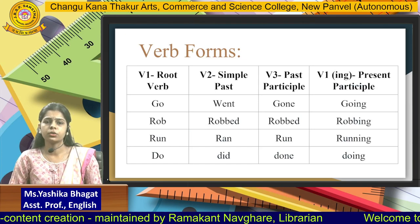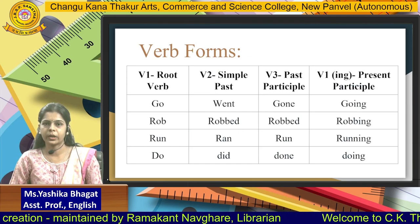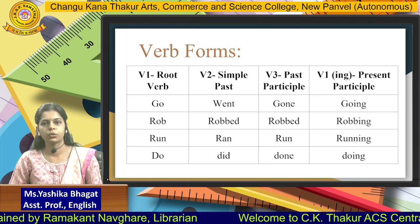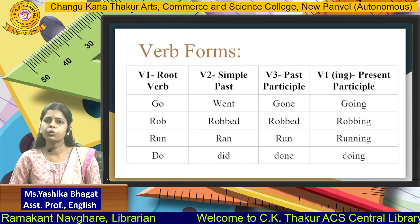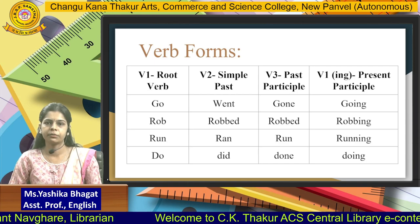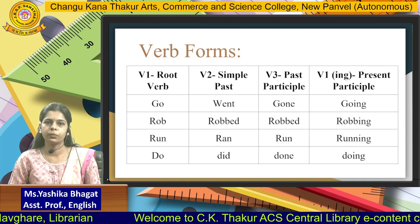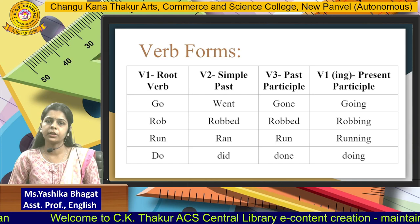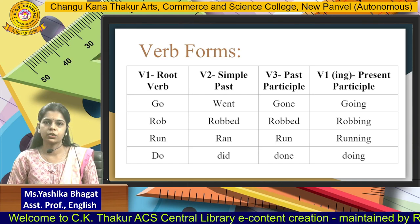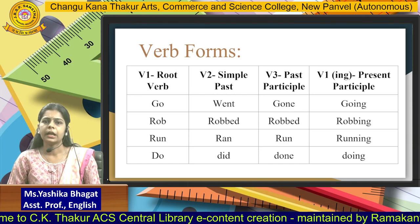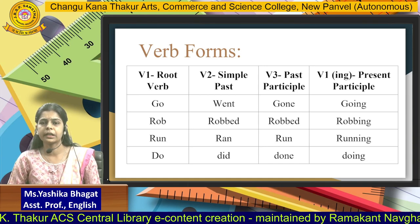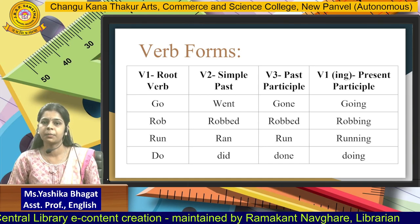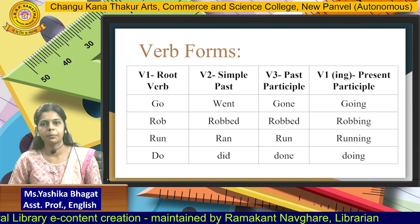Now, to understand the topic of tenses well, you need to know the four verb forms really well before going into the topic. What are the four verb forms? Usually we refer to them as V1, V2, V3 and V1-ing form. Remember, there is no V4 form — it is called V1-ing. Their technical names are root verb, simple past, past participle and present participle.